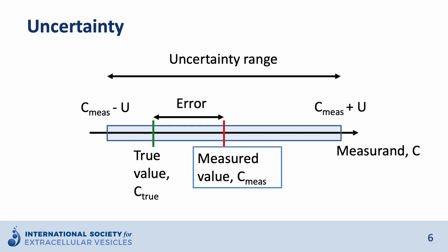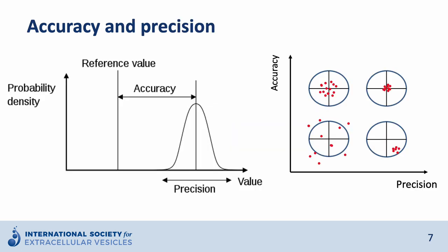The error is defined as the difference between the true value and the measured value. When we perform a measurement, accuracy and precision are important parameters. For repeated measurements we will get values which will scatter due to random and systematic errors, so we will obtain a distribution of measured values. Precision is defined as the width of this distribution.